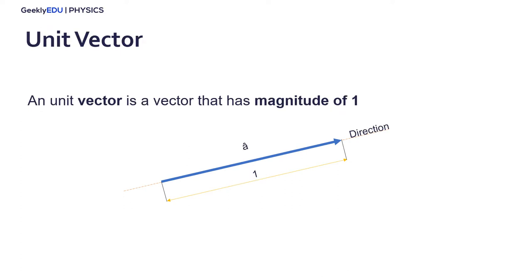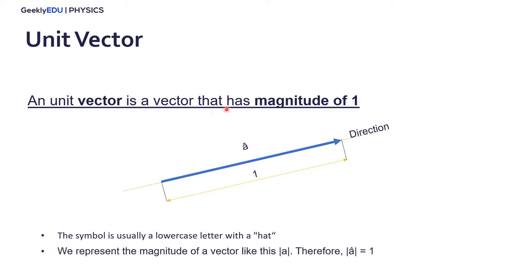What is a unit vector? Well, a unit vector is a vector that has magnitude of 1. We usually use a lowercase letter with a hat above it. To represent the magnitude of a vector, we put the letter between two vertical dashes.